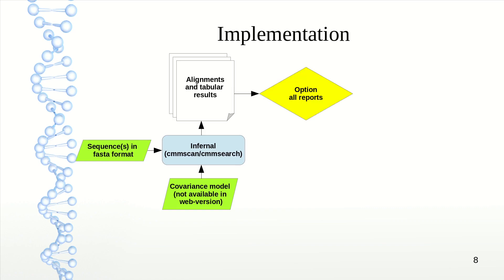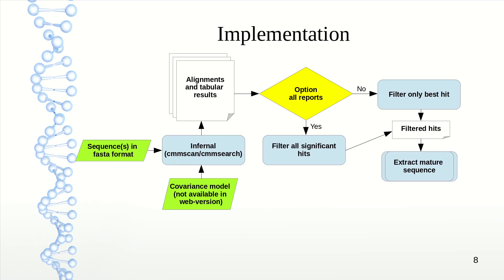After alignment, you have alignments and tabular results which are processed according to your options. If you select all reports, it gives you all found alignments with a high enough score, filtering all significant hits. If not, it filters only the best hit, returning one sequence. Both results give filtered hits.